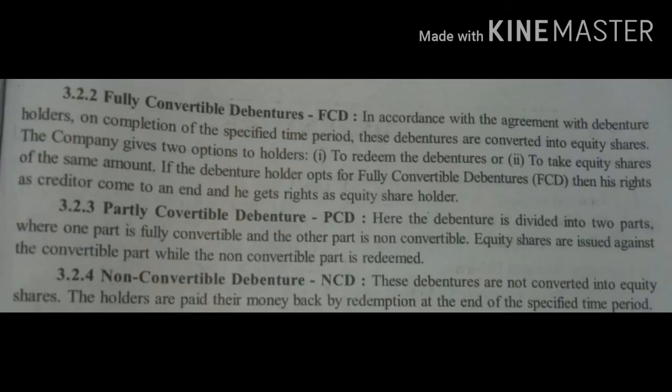At the time of liquidation, the debenture holder has the first right on the assets of the company. Fully convertible debenture means these debentures can be fully converted into shares once the agreement-specified period is completed — converted into equity shares. The company gives two options to the holder: to redeem the debenture or to take equity shares of the same amount. If the debenture holder opts for fully convertible debenture conversion, his rights as creditor come to an end and he gets rights as an equity shareholder.